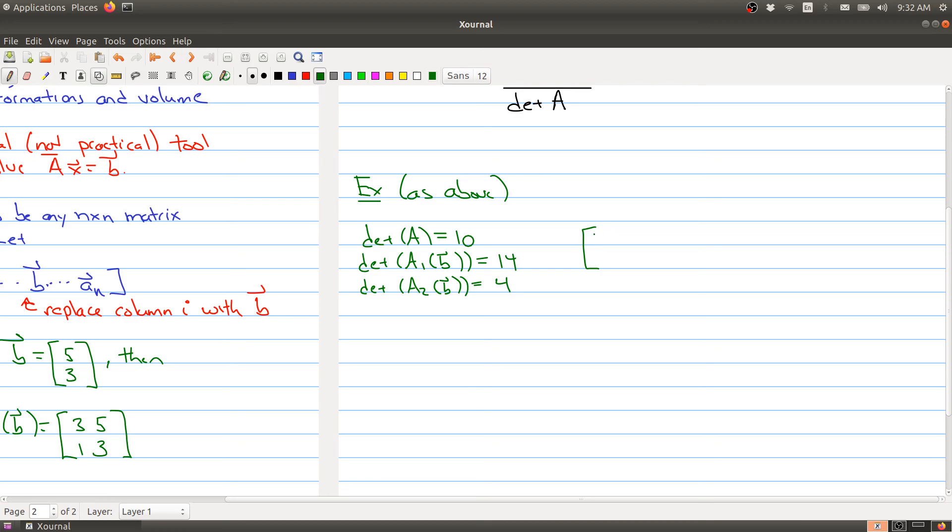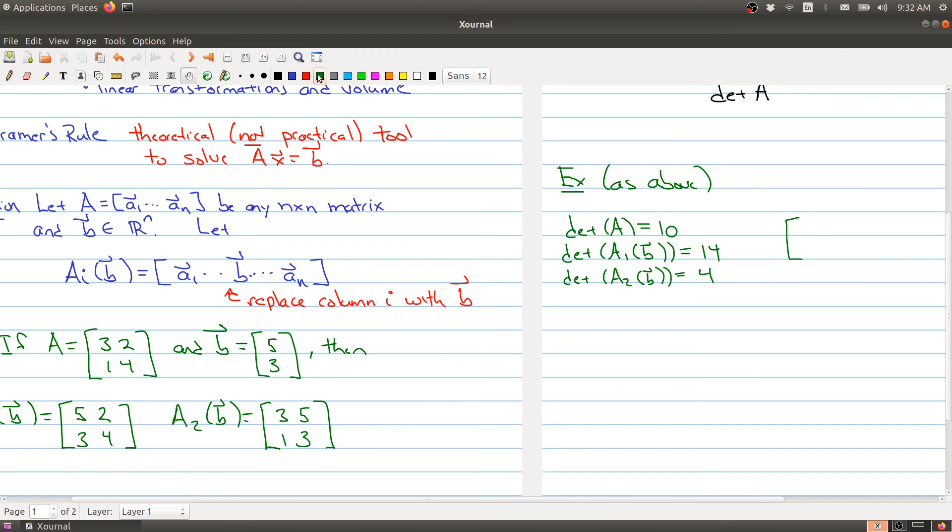So the matrix [3, 2; 1, 4] times x equals [5, 3] has the solution x_1, x_2. And this is given by 14 over 10 and 4 over 10. So that will give us the unique solution to the system of equations. It's a pretty handy tool. For 2 by 2 matrices, this is actually fairly quick.